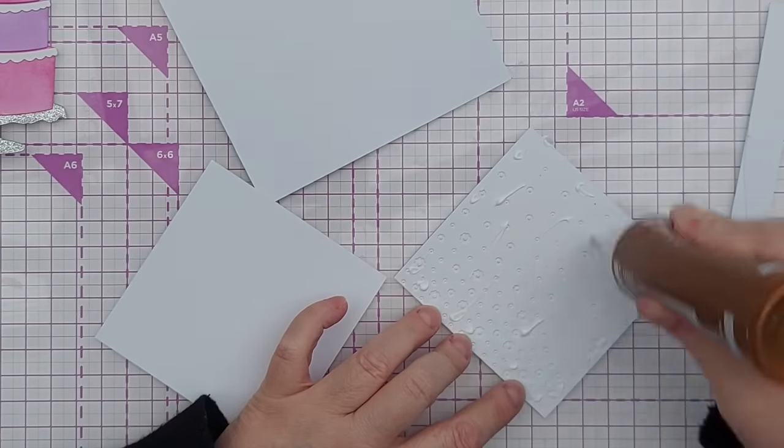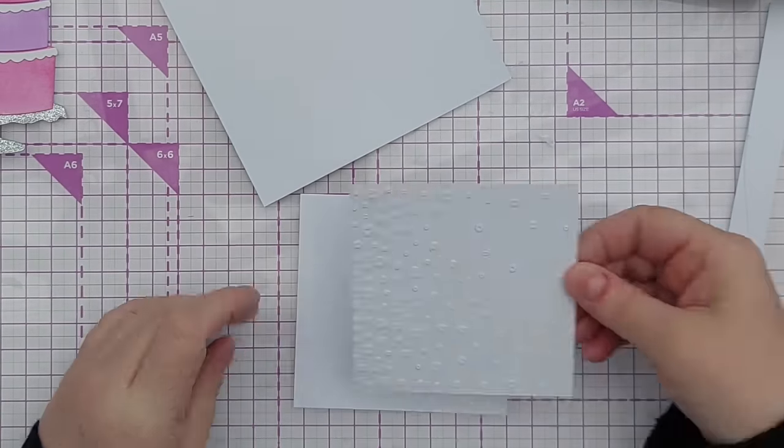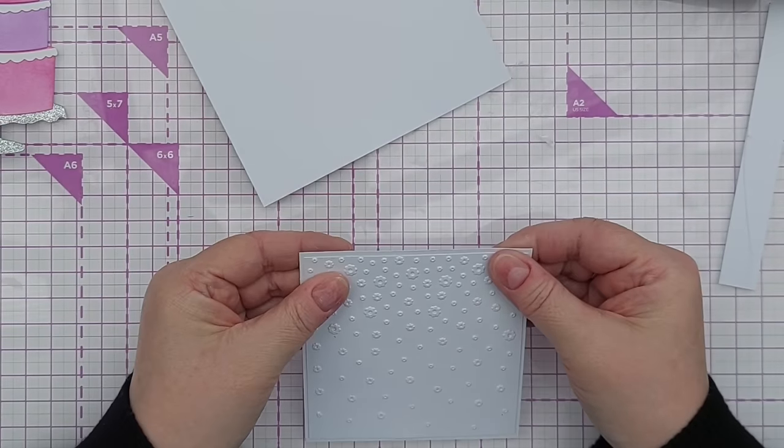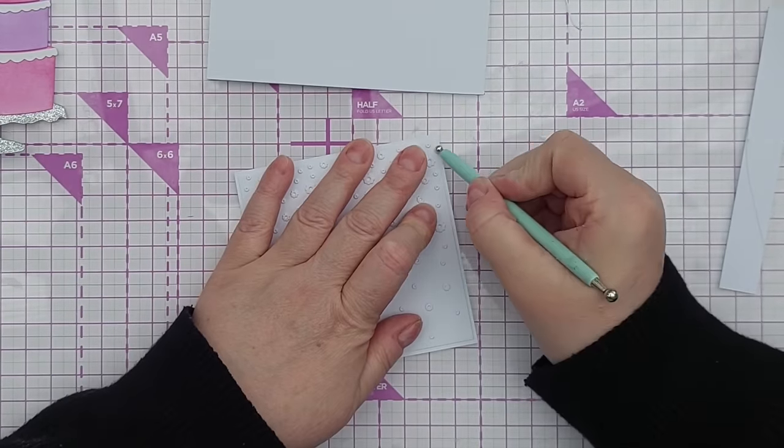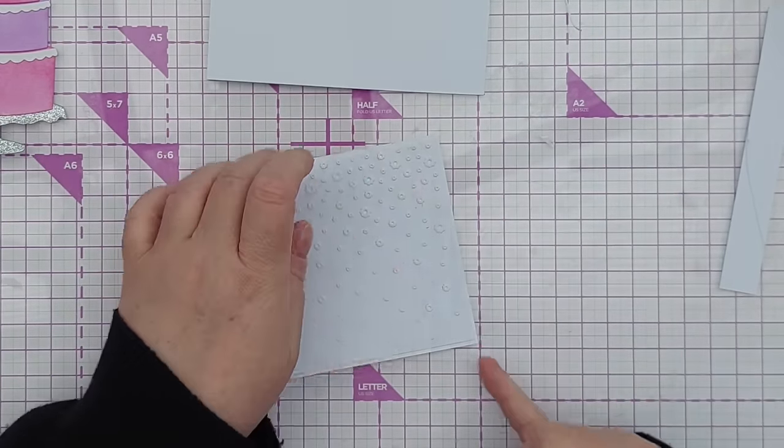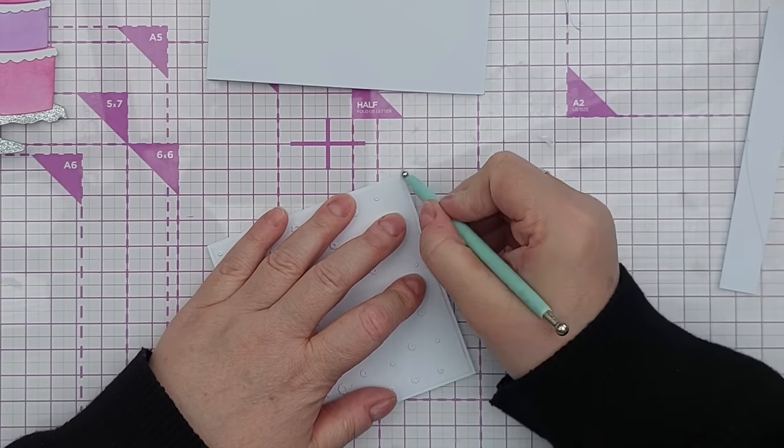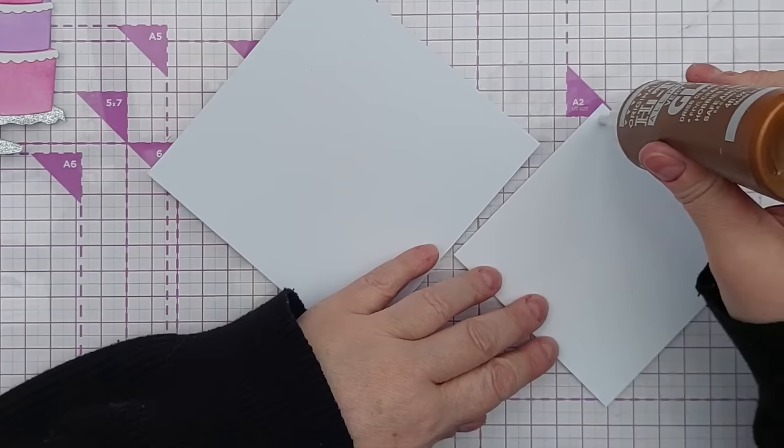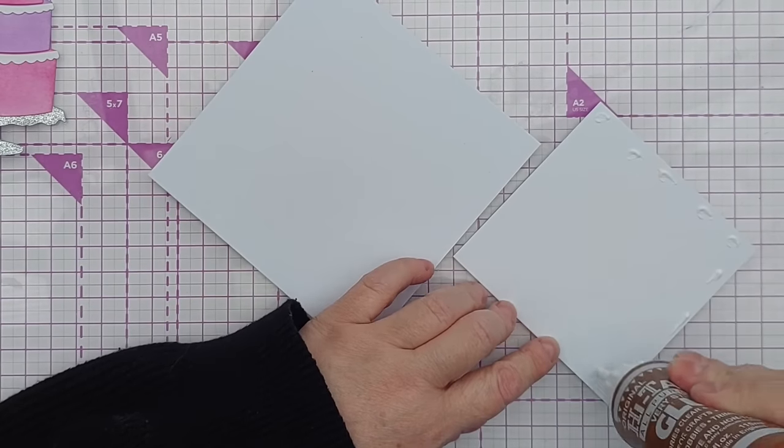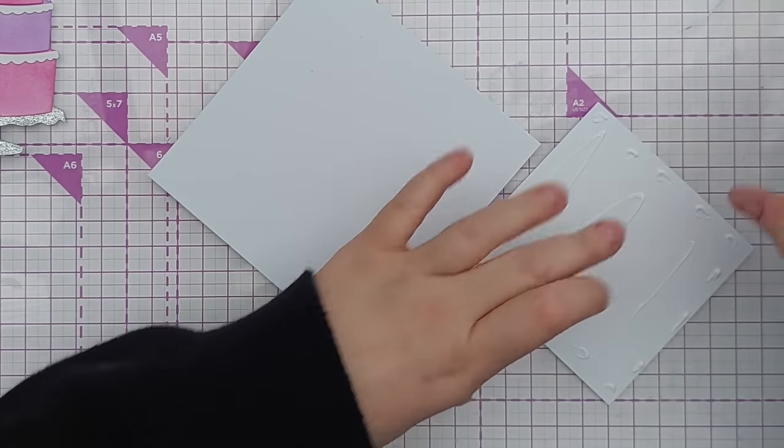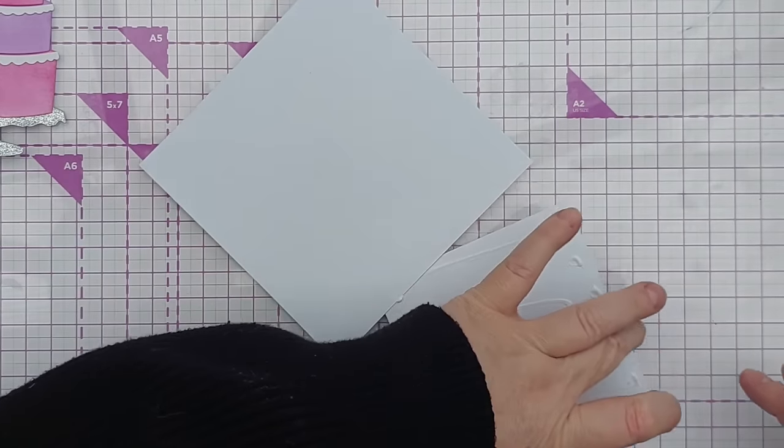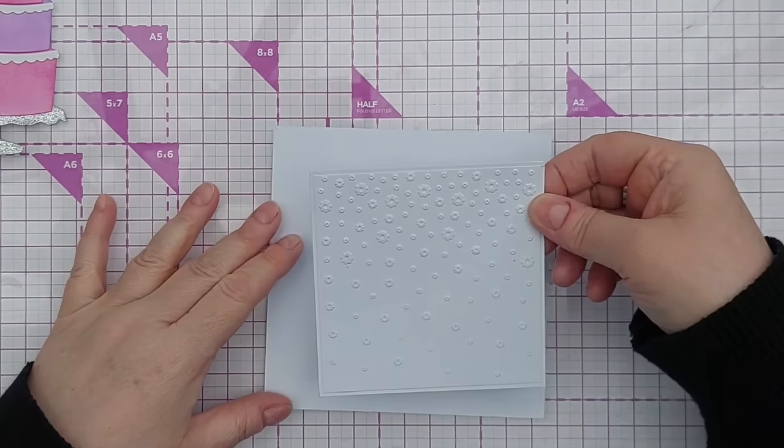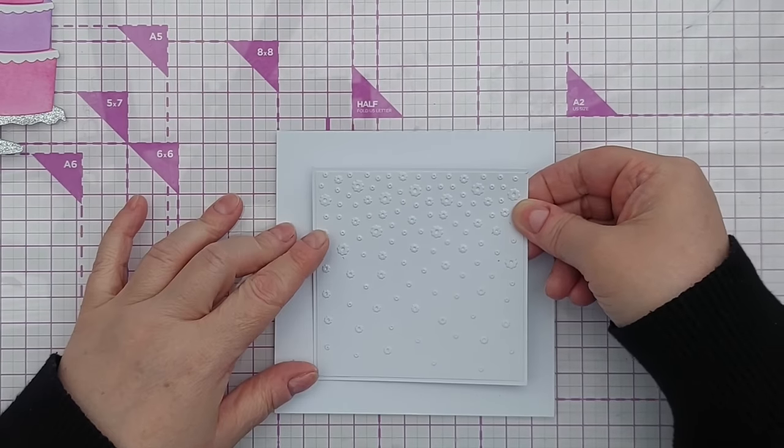Next I took the embossed panel and stuck it on a slightly larger panel of smooth white cardstock to give it a border, and to neaten the edges I took an embossing tool and ran it round all four sides of both panels and that just bevels the edges and gives them a neater die cut look. I then took this whole piece and glued it onto the front of a five and a half by five and a half inch card blank made from smooth white cardstock, and I placed that centrally because I wanted a symmetrical background for my cake.